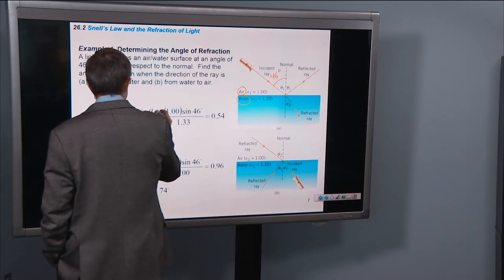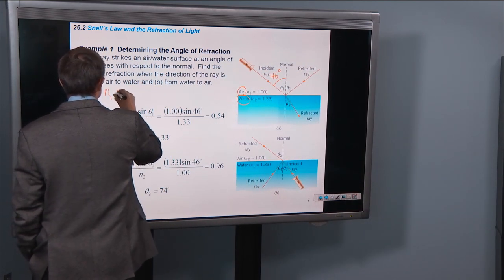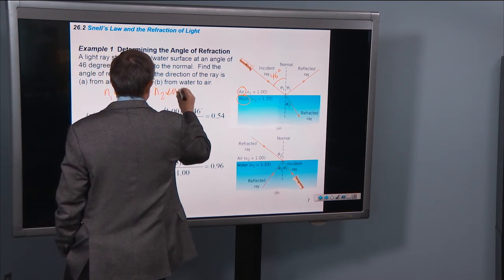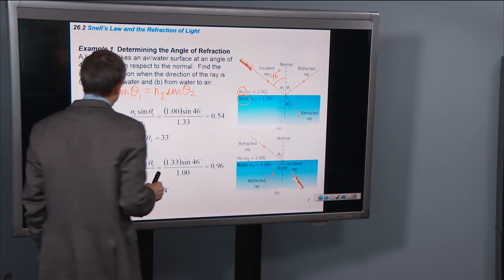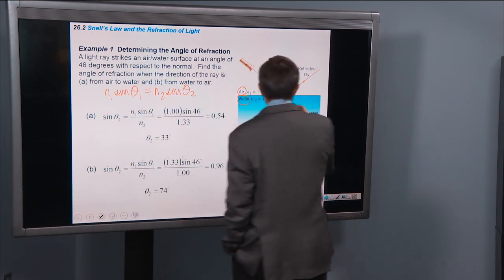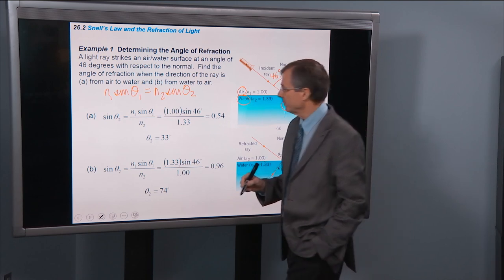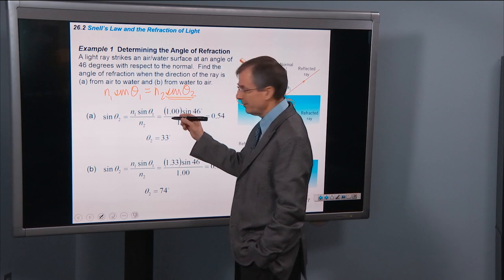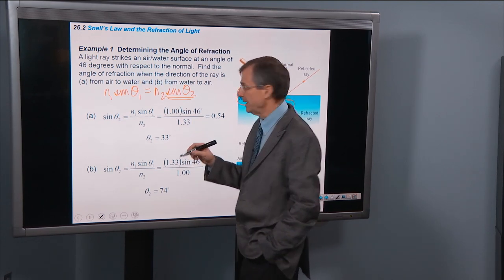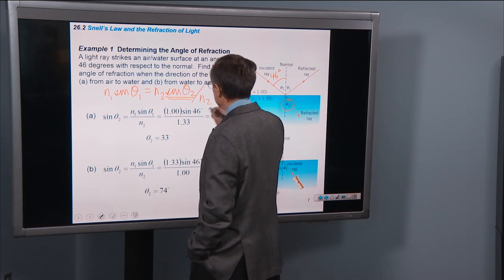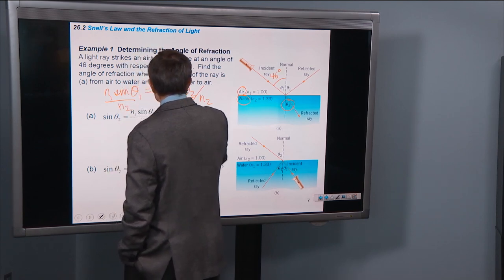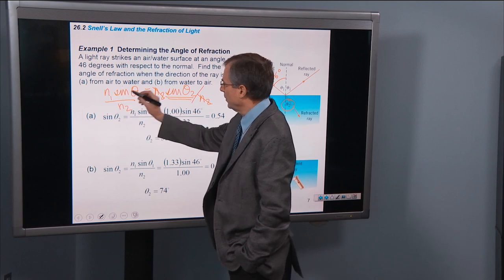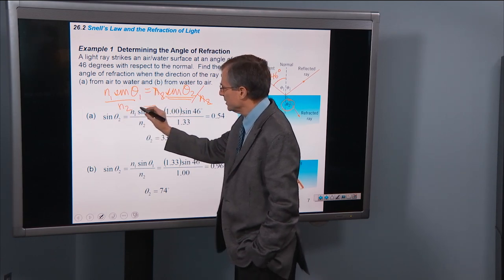Well, N1 sin θ1 equals N2 sin θ2. And what we're interested in is this angle θ2 because we already have angle θ1. And so if I want to solve for the angle θ2, then I'm going to divide both sides of this equation by N2. The N2s then cancel and we get sin θ2 equals N1 sin θ1 over N2. So that's what we have here.